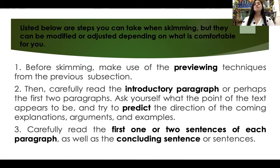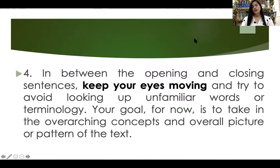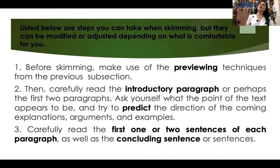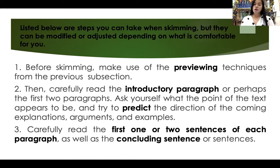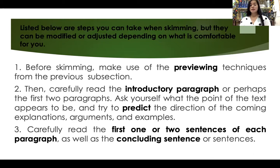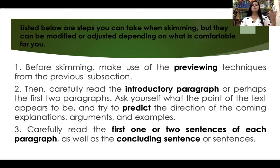Listed below are steps you can take when skimming, though they can be modified depending on what is comfortable for you. Before skimming, make use of the previewing techniques from the previous section — know the title, the author, the background of the author, when and where it was published, and so on. Then, carefully read the introductory paragraph or perhaps the first two paragraphs. Ask yourself what the point of the text appears to be, and try to predict the direction of coming explanations, arguments, and examples. Carefully read the first one or two sentences of each paragraph as well as the concluding sentence. The topic sentence almost always contains the argument, and the concluding sentence gives the overall gist of the paragraph.